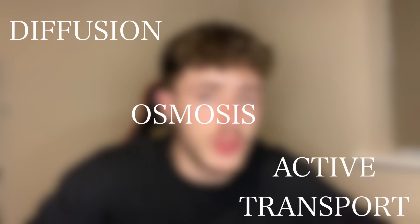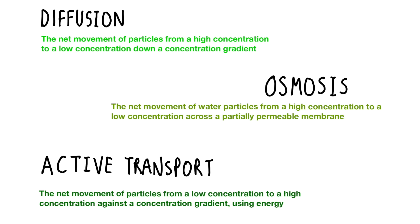The final part of cell biology is diffusion, osmosis and active transport. It is really important you know the definitions for each of these. Diffusion and osmosis involve movement from a high concentration to a low concentration, while active transport is an active process as it moves substances from a low concentration to a high concentration.